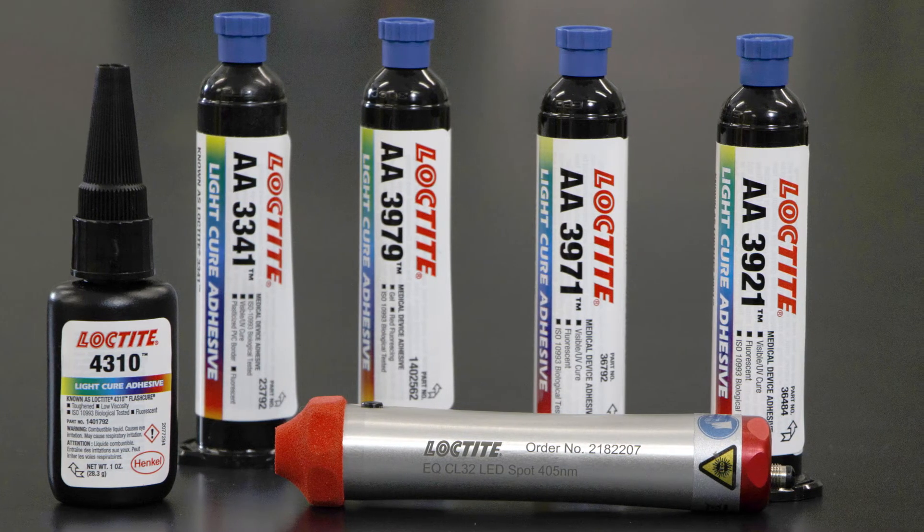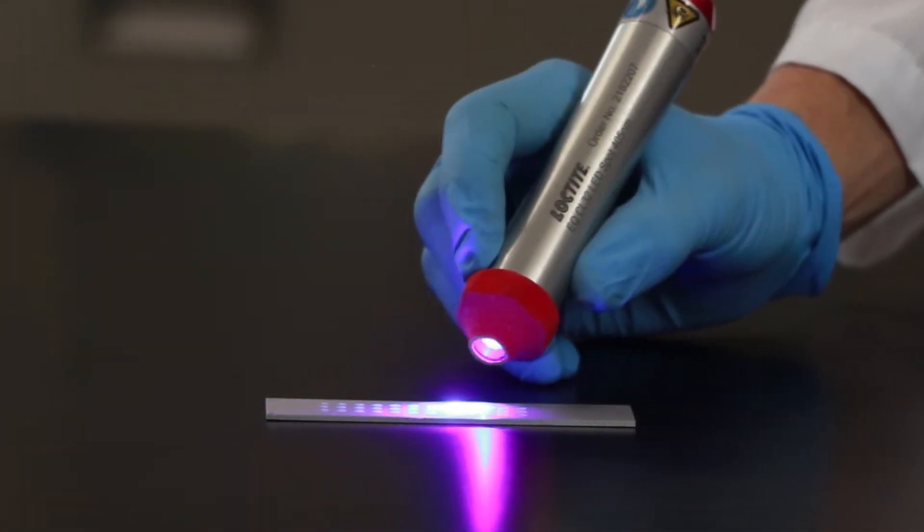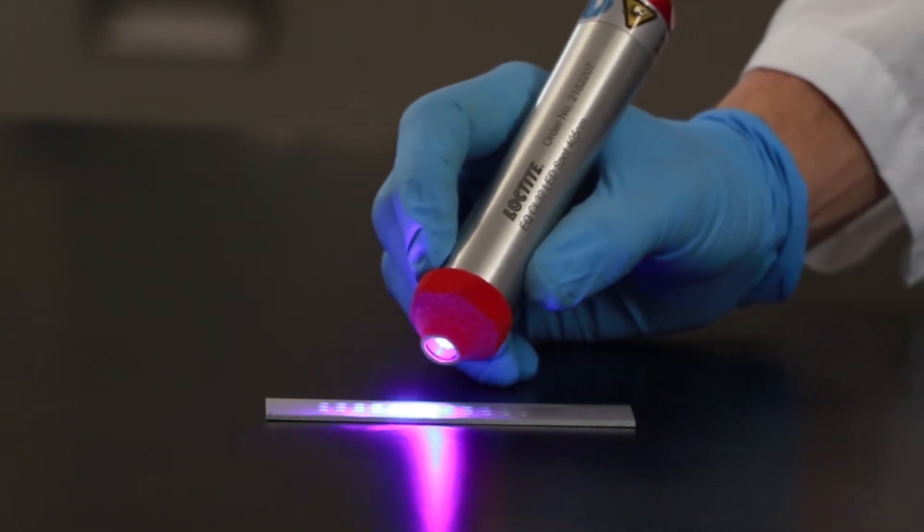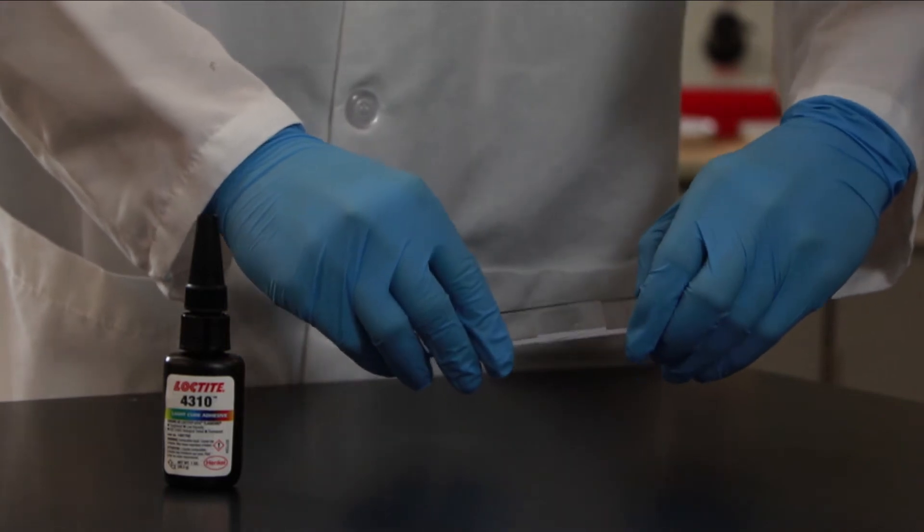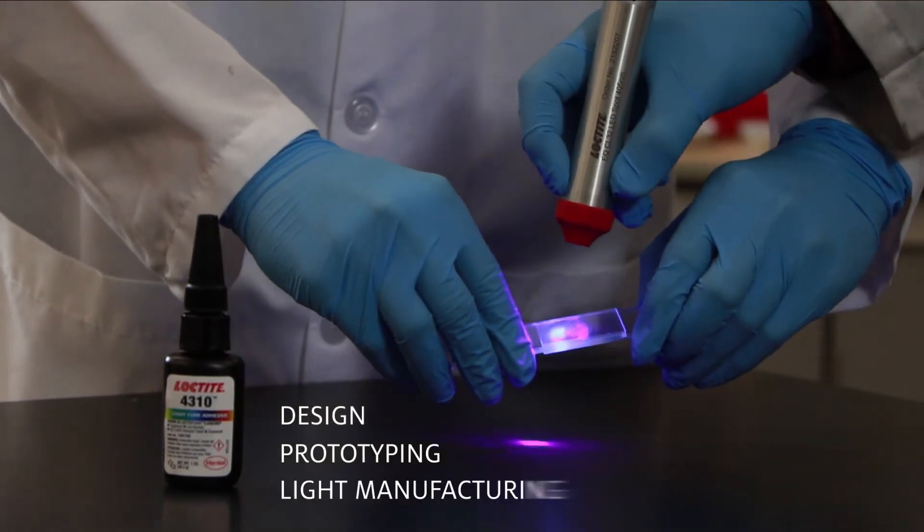The Loctite CL32 LED spot system directly meets this need, as its compact and ergonomic design is perfect for applications such as design, prototyping, and light manufacturing.